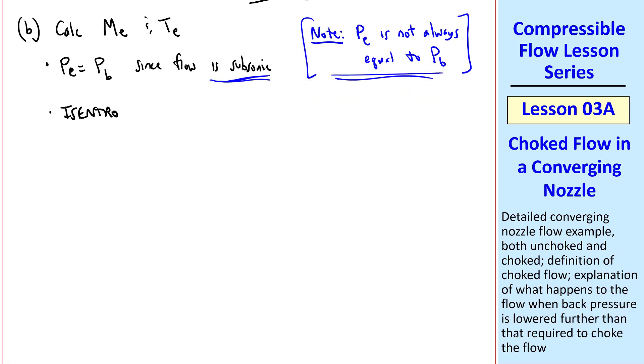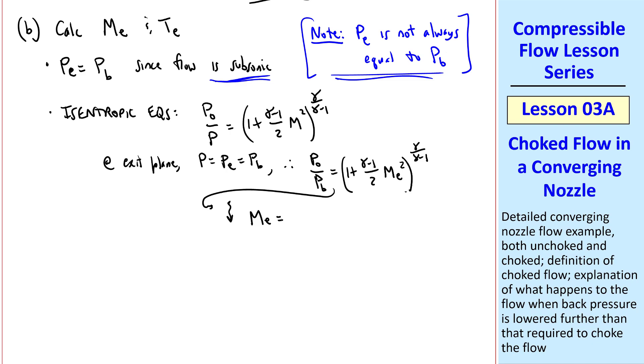Now let's use our isentropic relationships. Namely, for pressure, ratio P-naught over P is 1 plus gamma minus 1 over 2 M squared to the gamma over gamma minus 1 exponent. At the exit plane, we set P equal Pe equal Pb. Therefore, P-naught over Pb is 1 plus gamma minus 1 over 2 Me, the exit plane Mach number, squared to gamma over gamma minus 1. We know gamma, of course, and we know P-naught and Pb. So we can solve this for Me. I won't show all the algebra, but you can easily find that Me is 0.82286, and to three digits I'll report it as 0.823 as my answer.